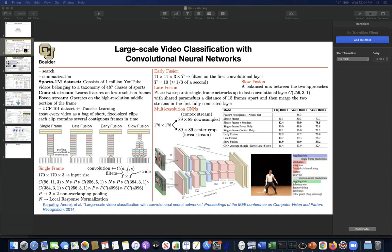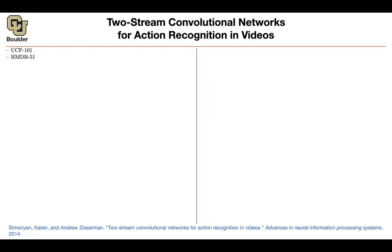Last session we started working with data in the form of a video. A video can be treated as several contiguous frames in time — it is still structured data. It has a structure on a two-dimensional grid, and that two-dimensional grid evolves over time, so now you have three dimensions rather than two to worry about.